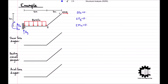Taking the x coordinate direction to be positive, the sum of all horizontal forces is equal to Rx plus 10 which equals zero, so Rx is equal to negative 10 kilonewtons. Taking the y coordinate direction to be positive, the sum of all vertical forces is equal to Ry minus 8 times 4 which equals zero, so Ry is equal to 32 kilonewtons.